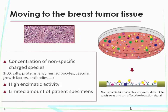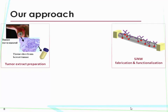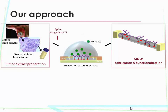Another problem is the very limited amount of patient samples and the low concentration of analytes. In our approach, we prepare tumor extract by mechanical destruction of breast tumor tissue biopsies and we dilute this material in solution a thousand times. We then use silicon nanowire field-effect transistors, which we fabricate and make into optimal sensors using antibodies. We then incubate the sensor in a solution of tumor extract plus antigen molecules. We first decided to work with an exogenously added rabbit antigen for many reasons.